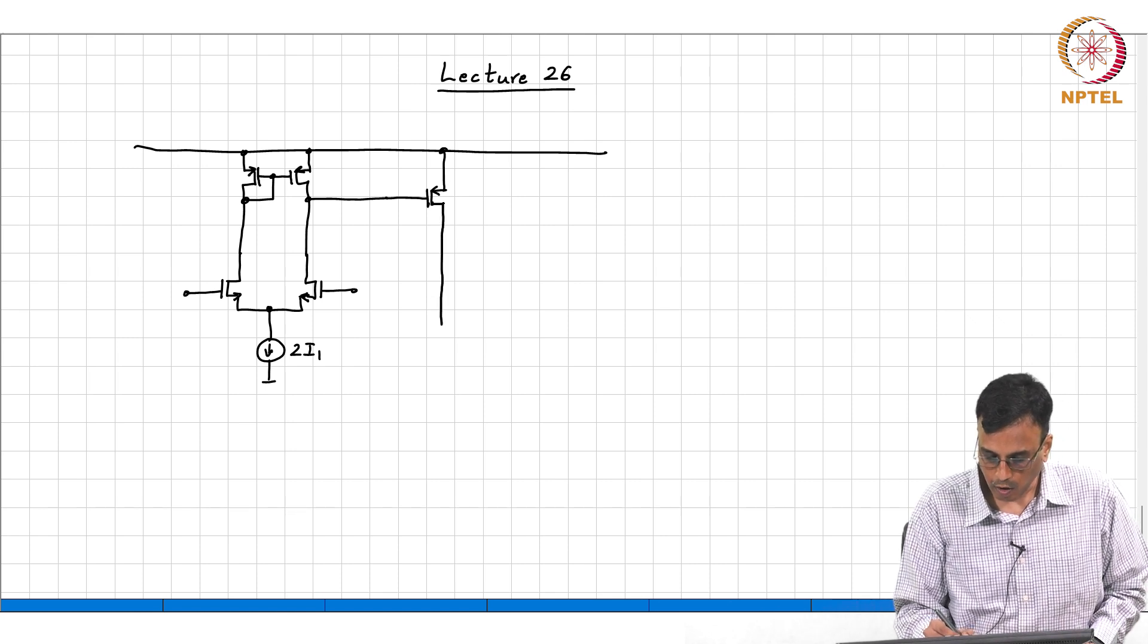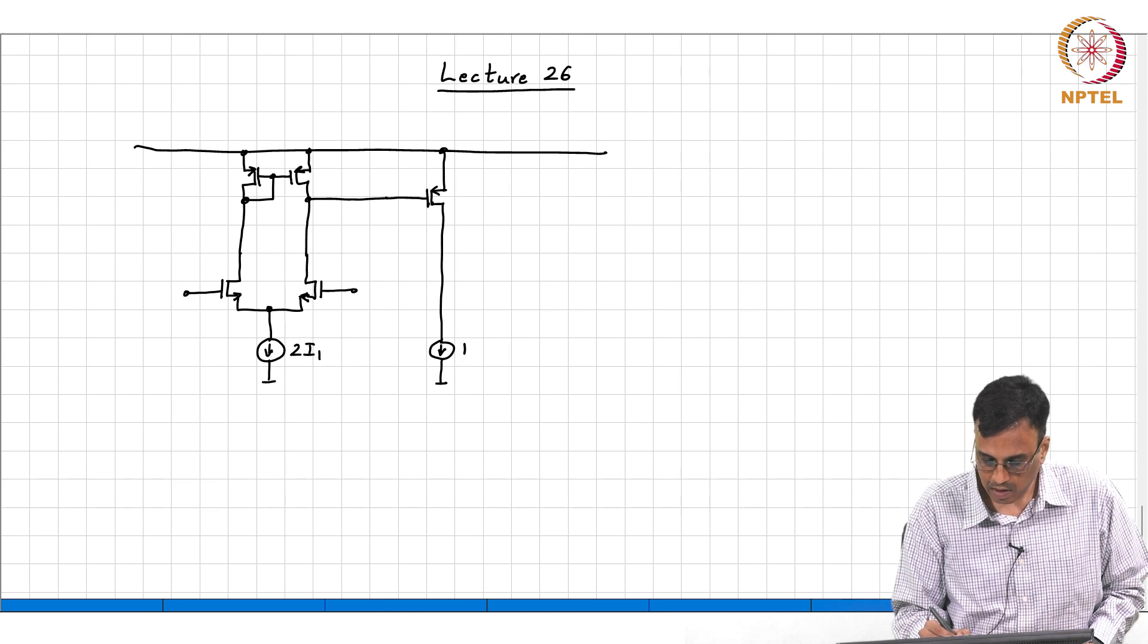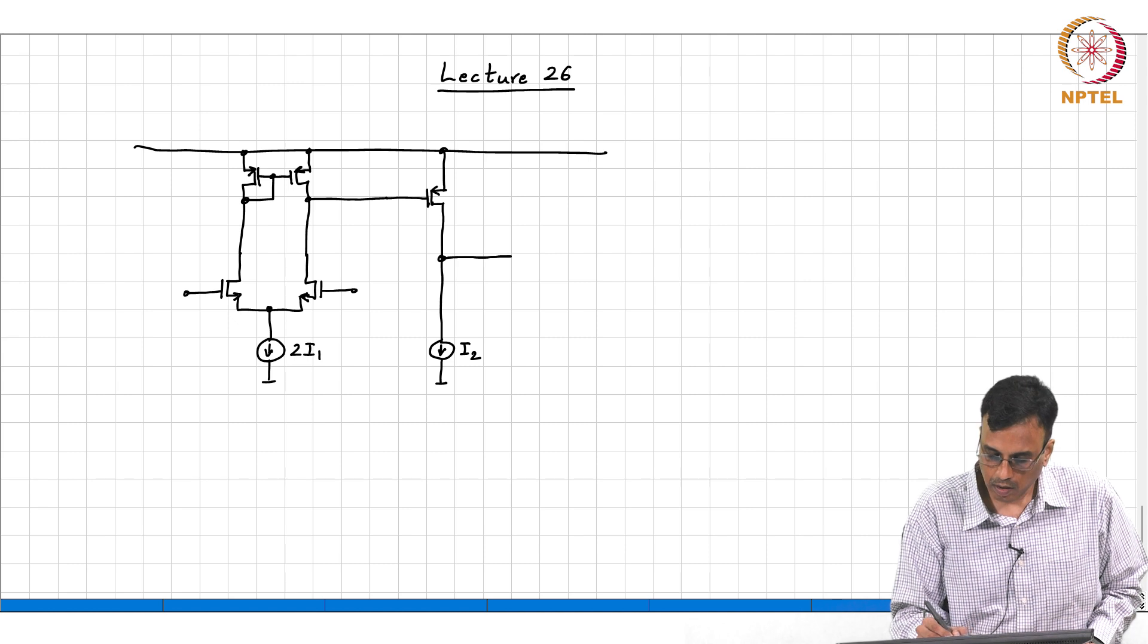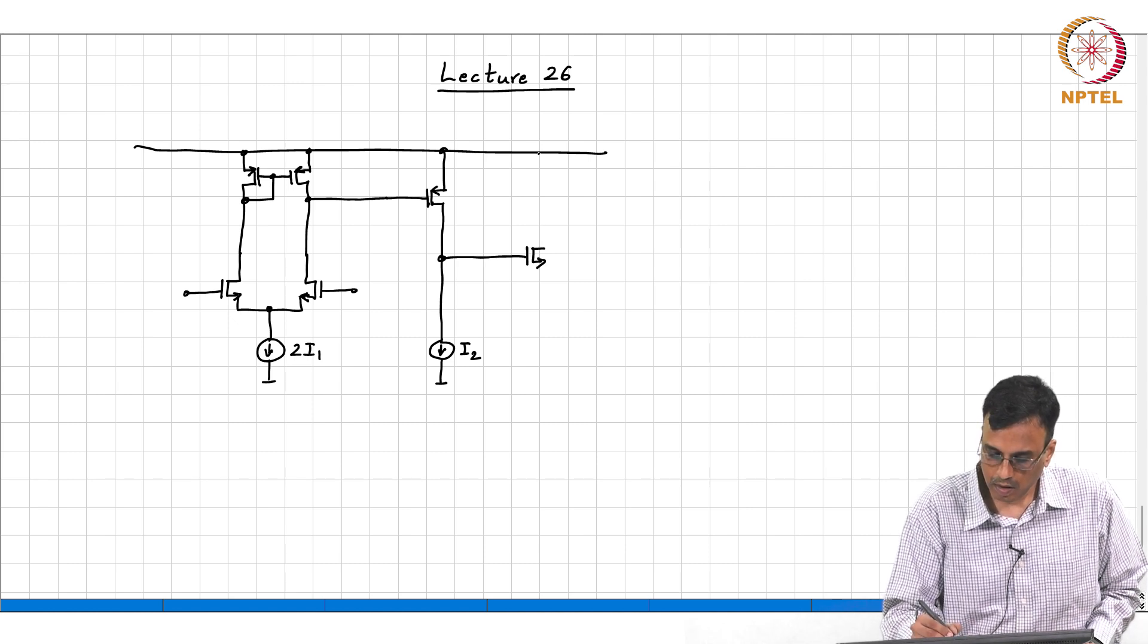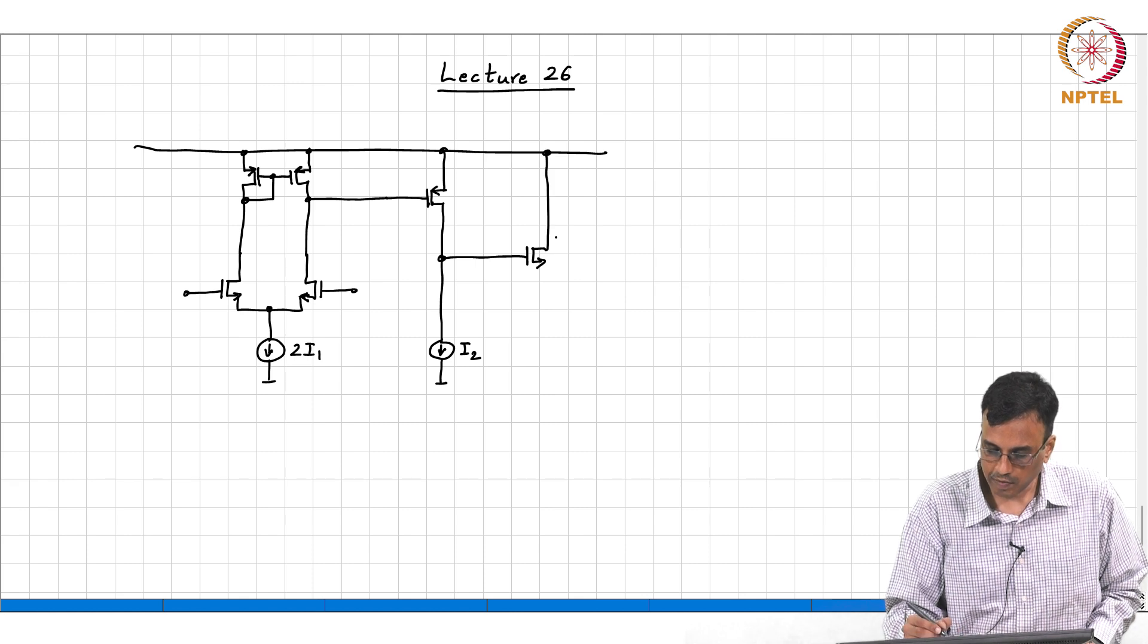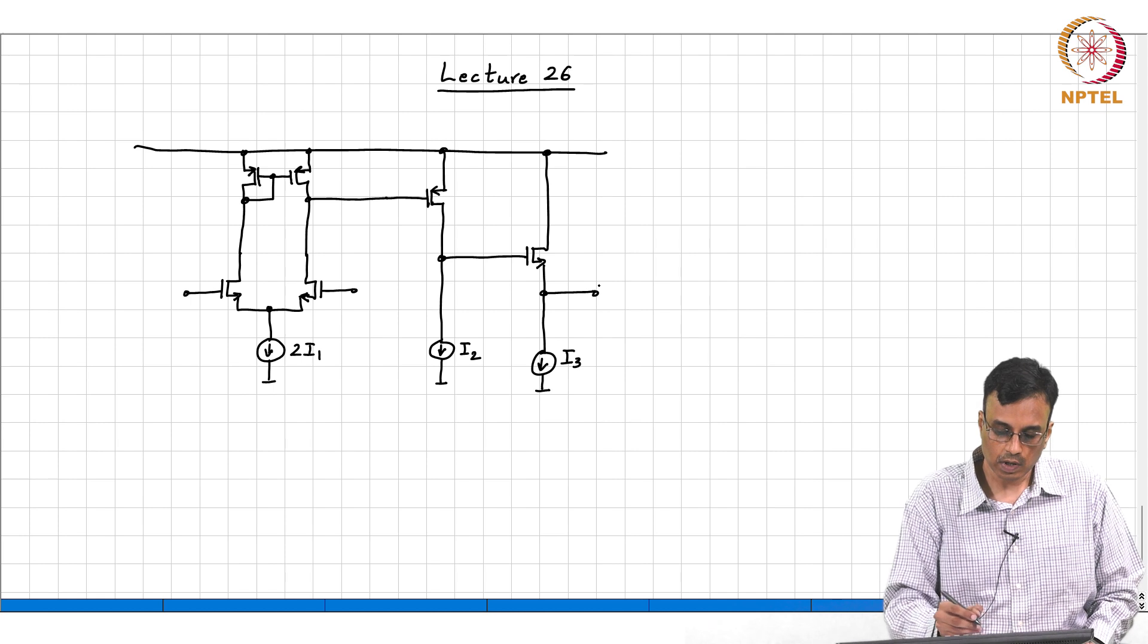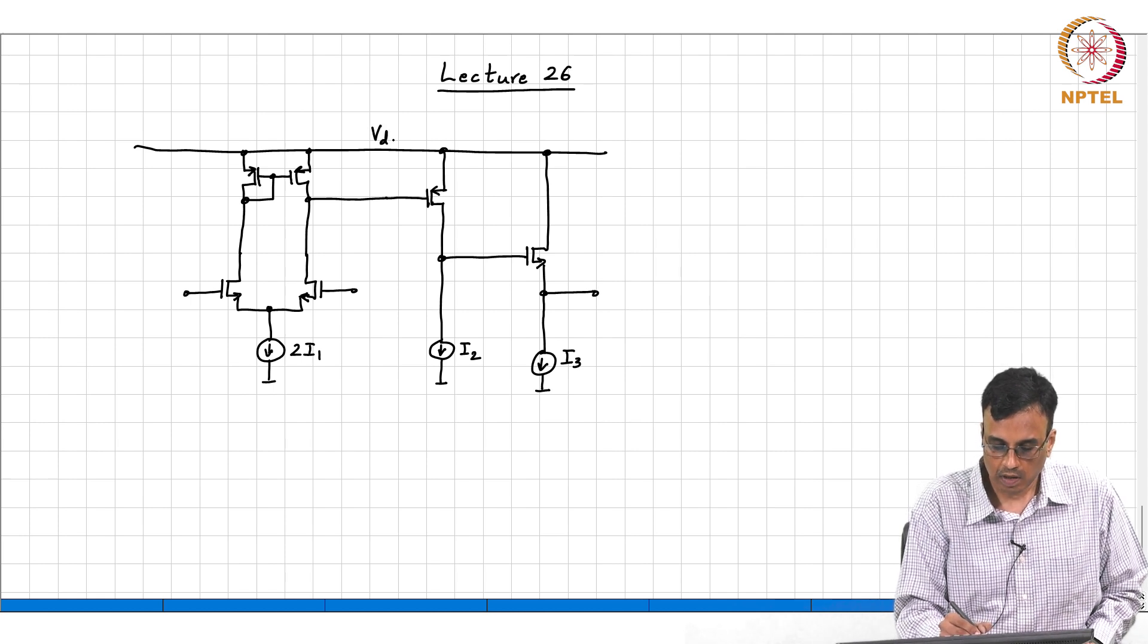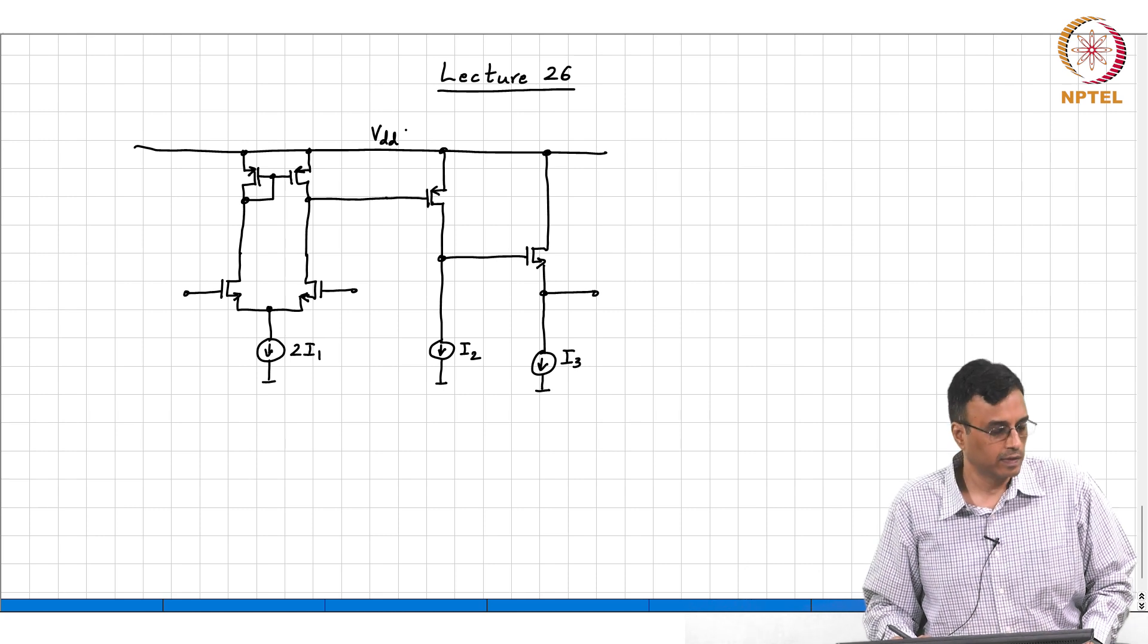Then a common source, second stage and some kind of source follower so that we get a low output impedance, right.